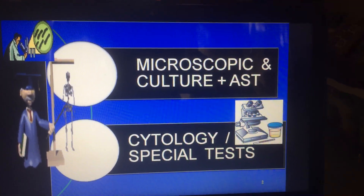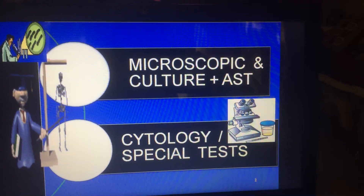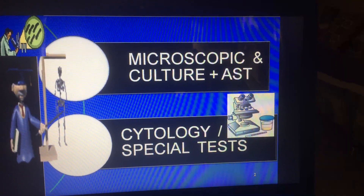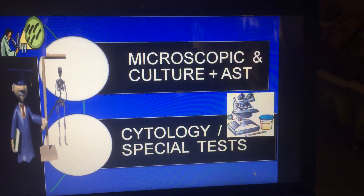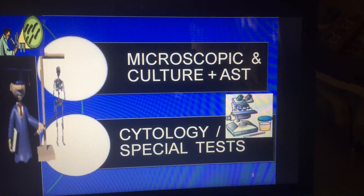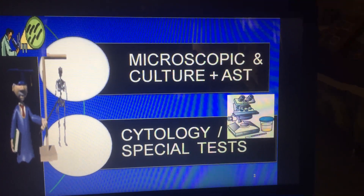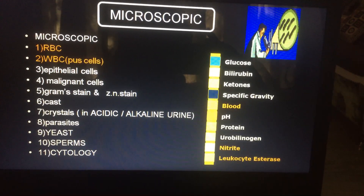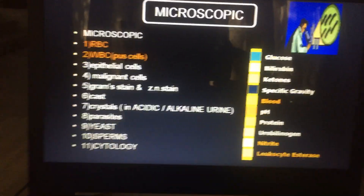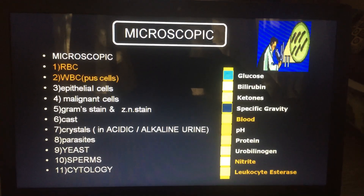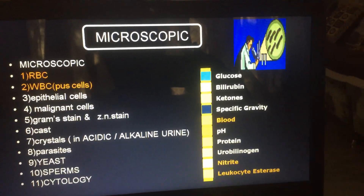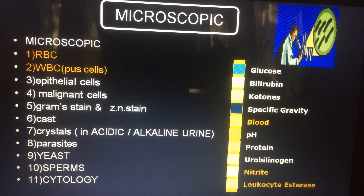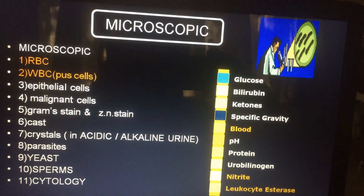We are starting with another part of urinary analysis: microscopic examination. We perform microscopic examination, and when there is a suspected infection — UTI — culture and antibiotic sensitivity is done. In a suspected case of malignancy, cytological examination and special tests are done. In microscopic examination, we look for RBC, WBC, epithelial cells, giant cells, malignant cells, gram stains for bacteria, gelatin stains for AFB, casts of different types, crystals, parasites, yeast, sperms, and cytology.